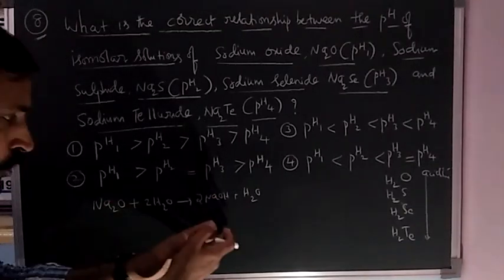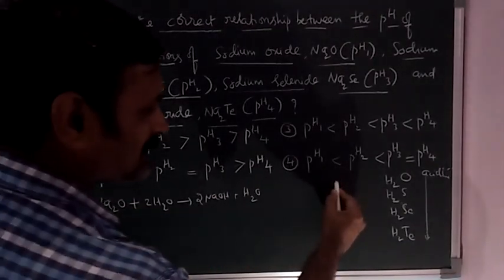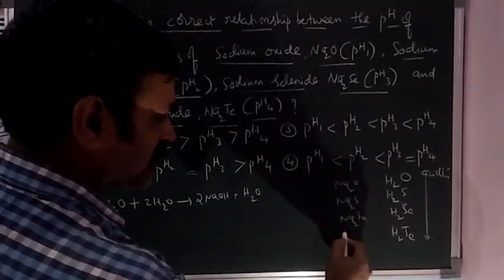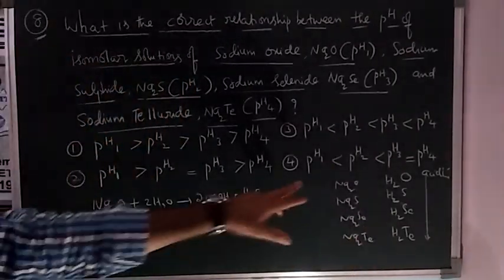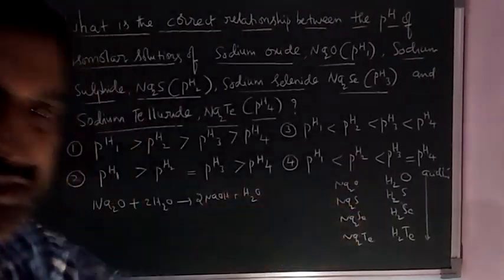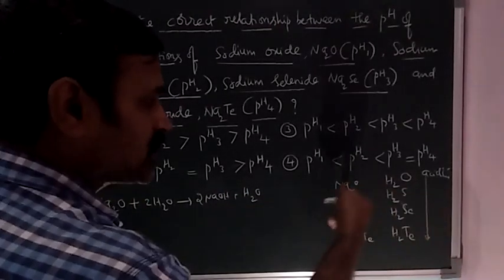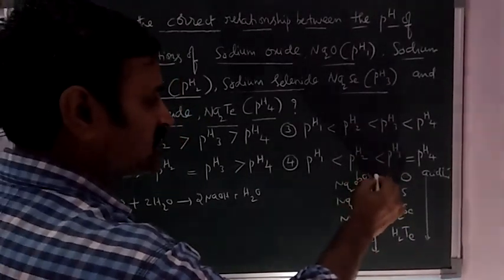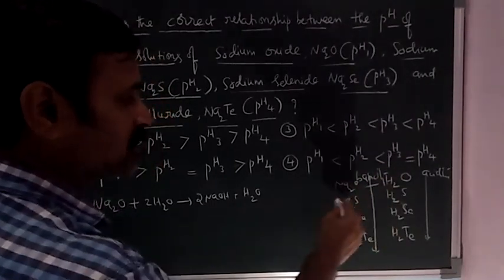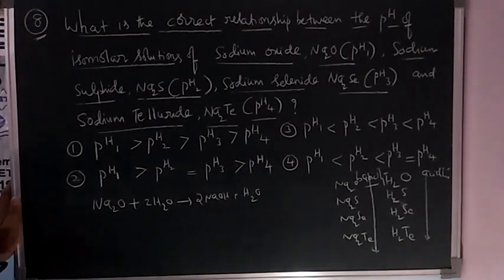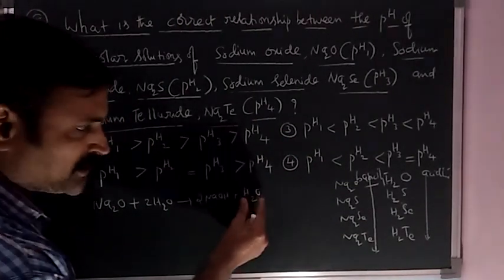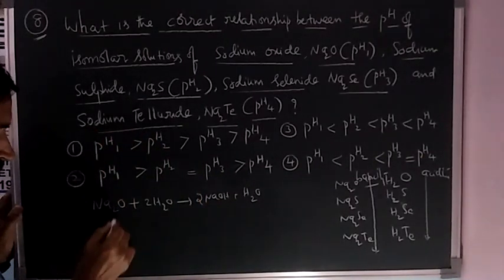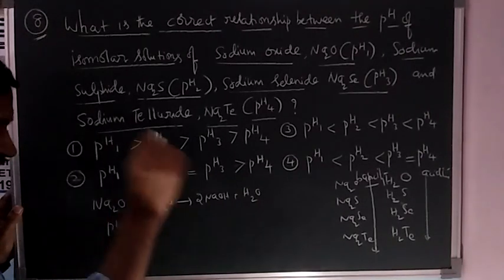We are getting H2O with Na2O. It indicates that Na2O, Na2S, Na2Se, and Na2Te are sodium compounds of this chalcogen series. The opposite concept here - if you apply from top to bottom, the basicity of these compounds decreases. That means H2O is a weak acid, so Na2O is a strong base. When the base is stronger, definitely its pH value is the highest value.